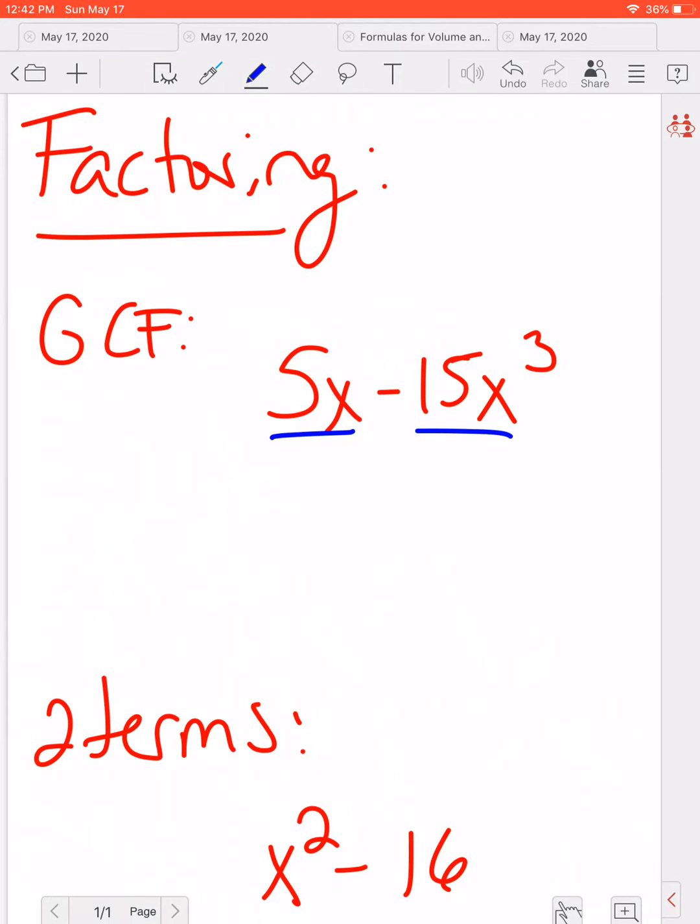So if I'm looking, we have two terms here. I see I can pull a 5 out of both of those and I can pull an X out of both of those. Now remember if I pull out the entire term, I need to leave a 1 there. So if I pull out 5X, 5X divided by 5X is 1. And 5X going into 15X cubed would go in 3 times for 5 and there would be 2 X's left over.